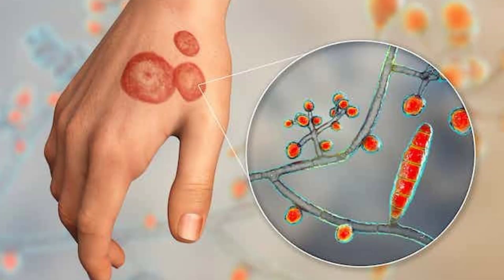Fungal disease: Ringworm. Ringworm is a common infection of the skin and nails that is caused by fungus. Approximately 40 different species of fungi can cause ringworm. The scientific names for the types of fungi that cause ringworm are Trichophyton, Microsporum, and Epidermophyton.